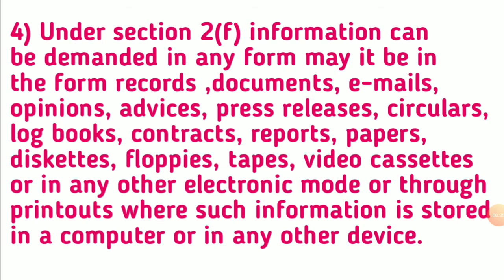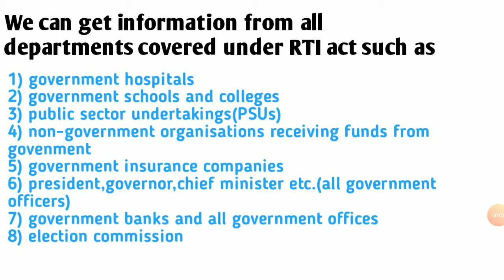Now I will tell you about the departments covered under RTI Act from which you can demand and get information. First, government hospitals. Second, government schools and colleges. Third, public sector undertakings known as PSUs. Fourth, non-government organizations receiving funds from government. Fifth, government insurance companies. Sixth, President, Governor, Chief Minister, and all government officers. Seventh, government banks and all government offices. Eighth, Election Commission.